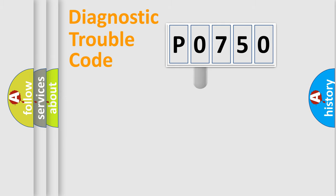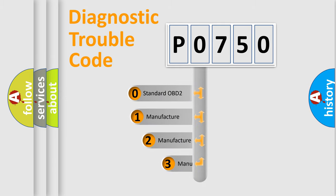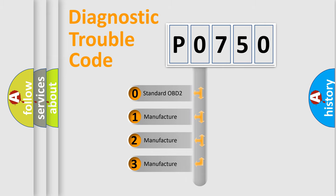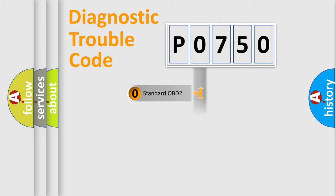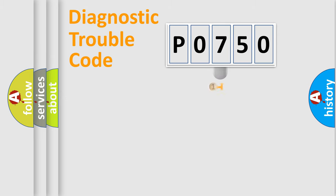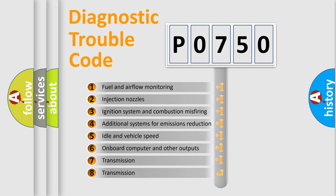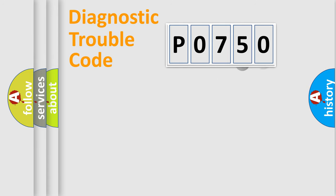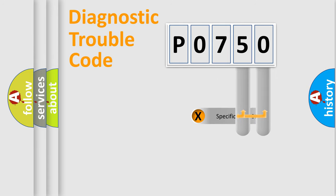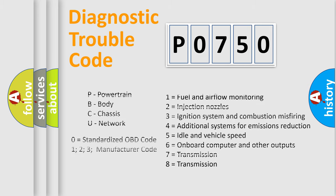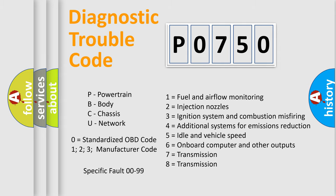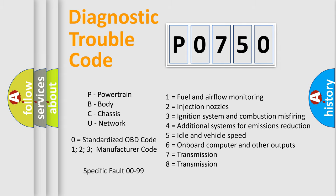This distribution is defined in the first character of the code. If the second character is expressed as zero, it is a standardized error. In the case of numbers 1, 2, or 3, it is a manufacturer-specific error. The third character specifies a subset of errors. This distribution is valid only for the standardized DTC code, and only the last two characters define the specific fault of the group.